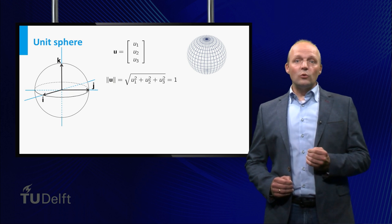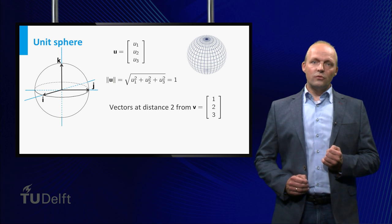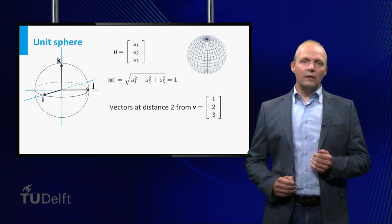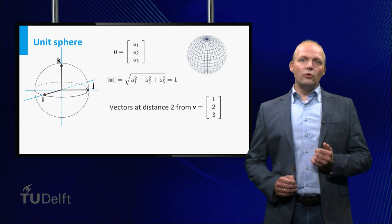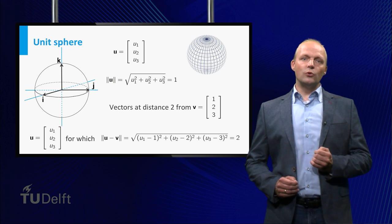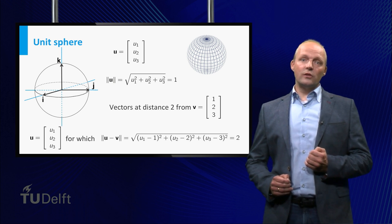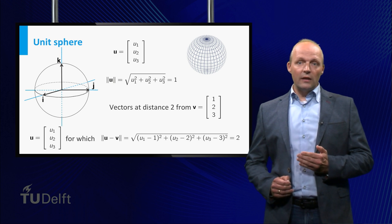A related question one could ask is which vectors are at distance 2 from the vector v is 1, 2, 3? Those are the vectors u for which the norm of the difference vector u minus v equals 2. And geometrically these are the points on the sphere centered at v with radius 2.